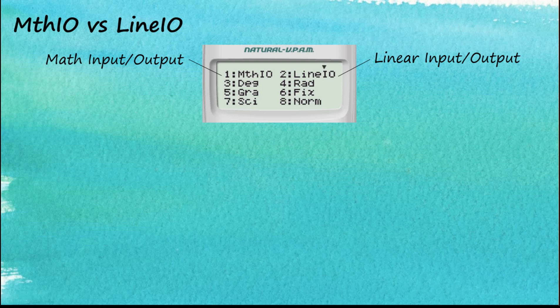The MathIO versus LineIO choice is the most important option you need to make before you start using your calculator. These two options govern how you input your data and how your answer is displayed.